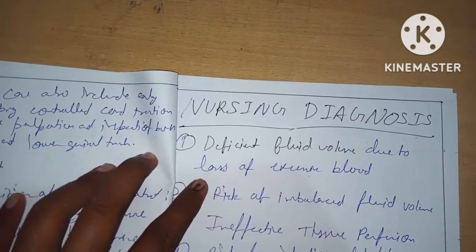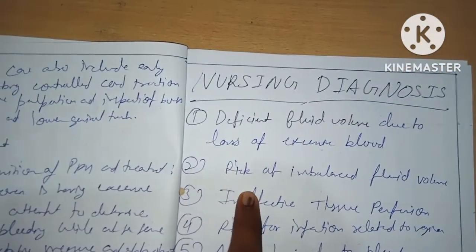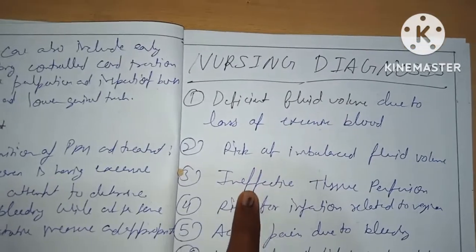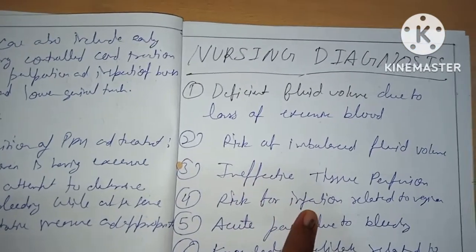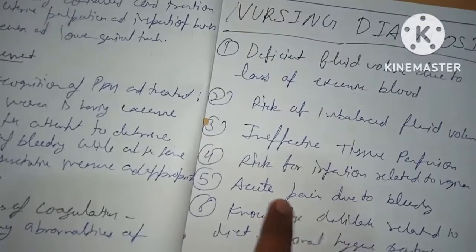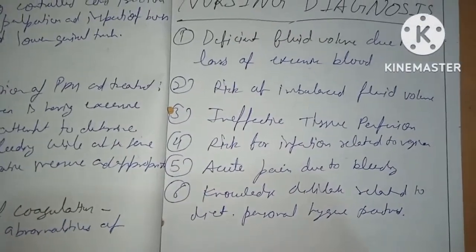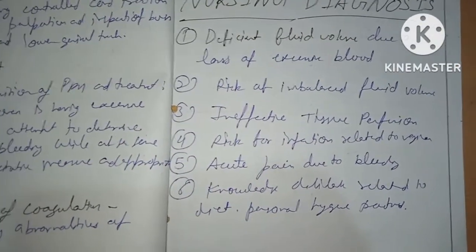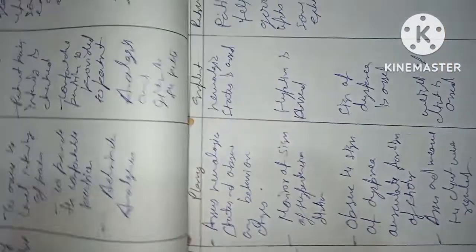Next come the nursing diagnoses: deficit fluid volume due to loss of excessive blood, risk of fluid imbalance, ineffective tissue perfusion, risk for infection, acute pain due to bleeding, and knowledge deficit related to diet and personal hygiene.